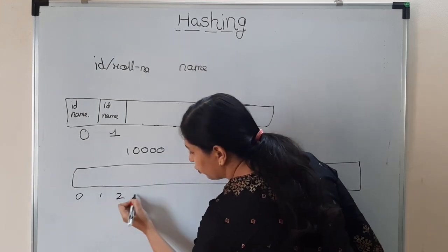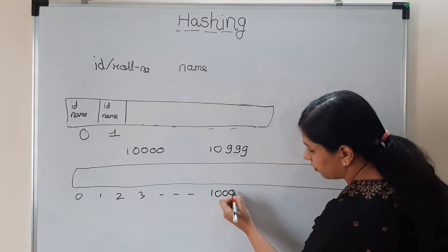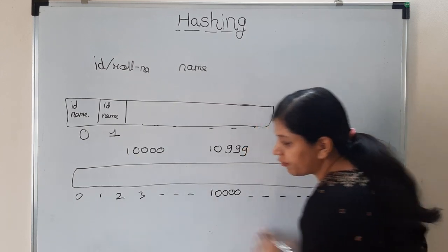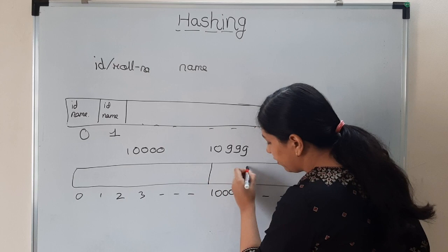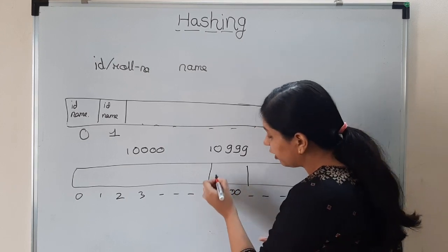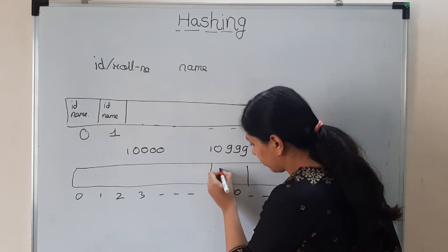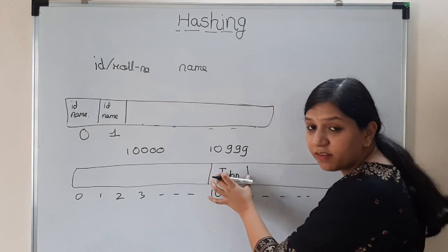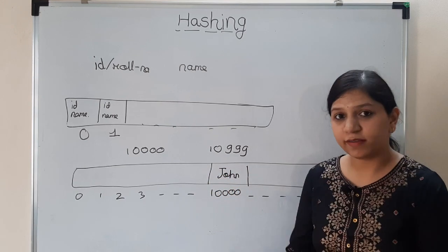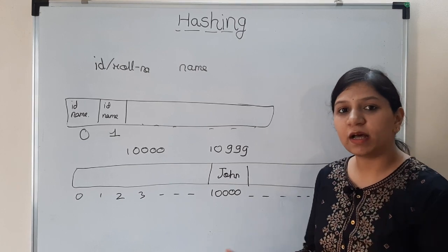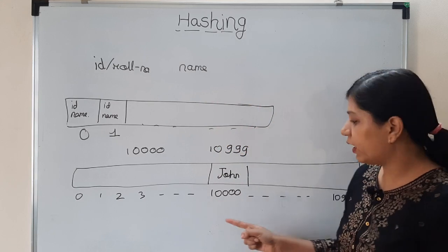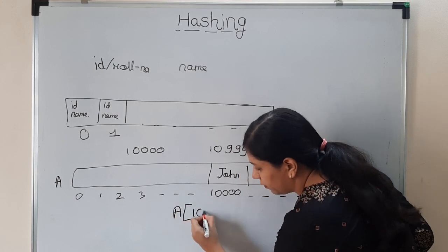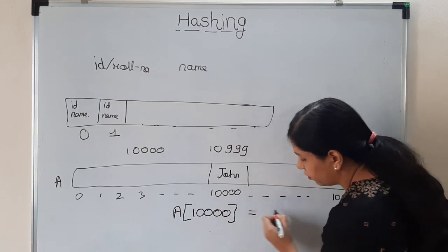Suppose the roll numbers are from 10,000 to 10,999. We saw this data. Now can we use it as an index of array? So this is your array: 0, 1, 2, 3... 10,000... 10,999. You created an array of this size, and at 10,000 you can put the name of the student. Suppose the name is John. So you are using the ID as the index and the name as John.